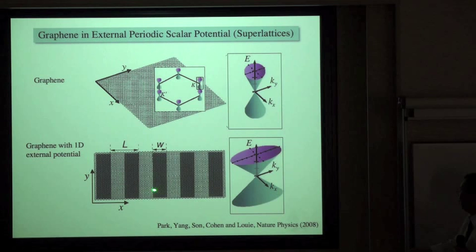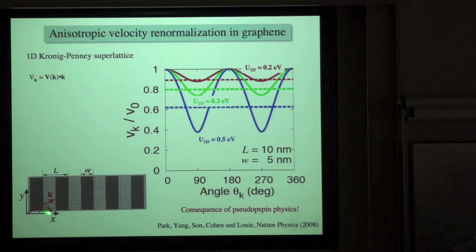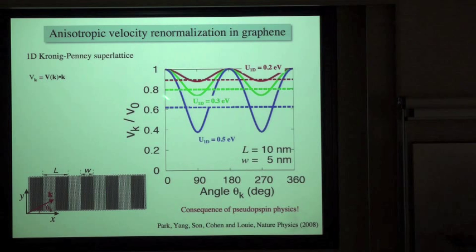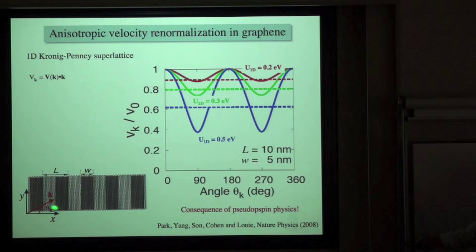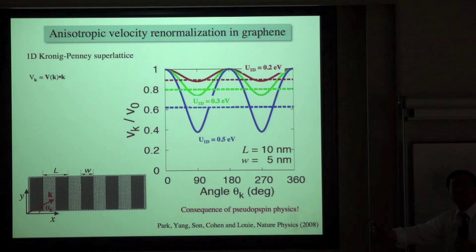But away from the direction of periodicity, the band structure can be modified a lot. The group velocity as a function of angle is totally unaffected along the x-direction but most affected perpendicular to it. This is a very counter-intuitive result — when electrons move across the potential barriers they are totally unaffected, but motion parallel to the barriers is strongly changed. This is related to pseudo-spin physics: there is no backscattering in graphene due to the potential, as shown by comparison with the case without pseudo-spin physics.